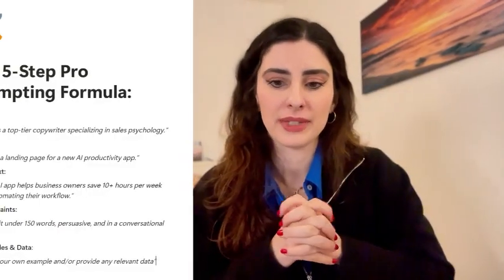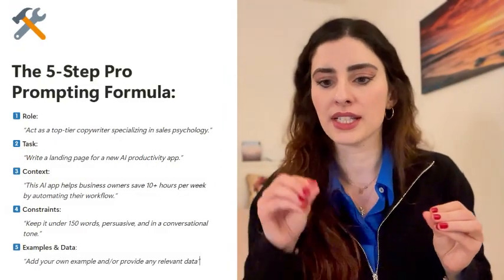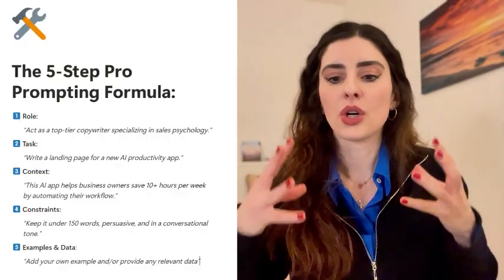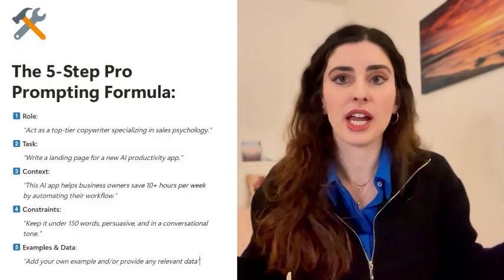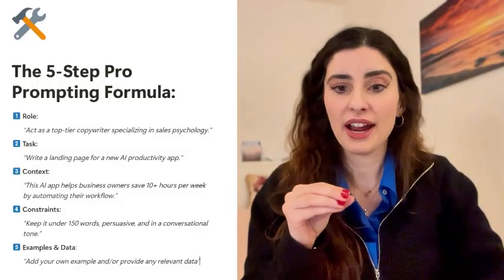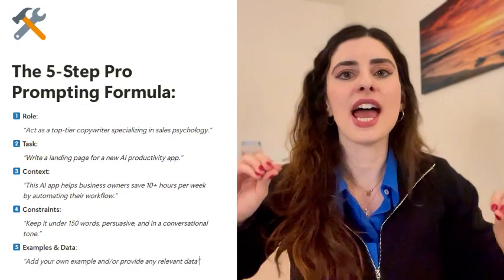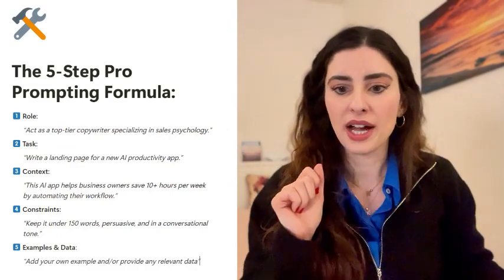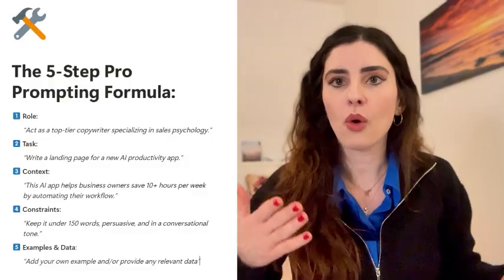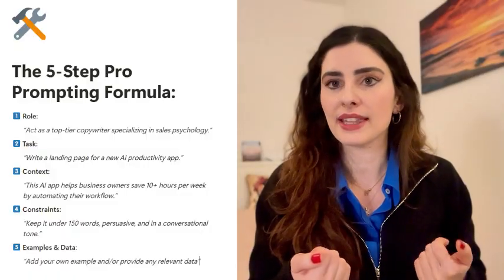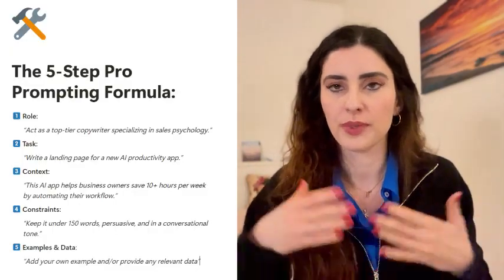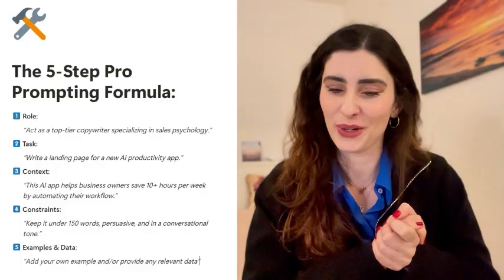For the role, you might say 'act as a top-tier, experienced, amazing copywriter specializing in sales psychology.' For the task: 'write a great landing page for a new AI productivity app.' For context: 'this AI helps business owners save 10-plus hours every week by automating their workflow.' For constraints, keep it under 150 words, or give it a tone — say it needs to be very professional, persuasive, and conversational.